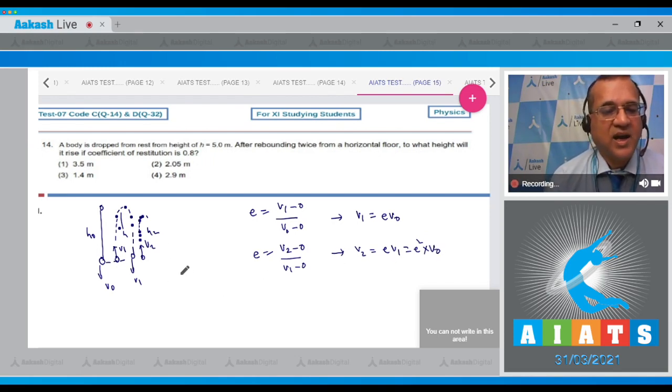Now what is the formula for height? You know that v equals root of 2gh. In the first case, and what will v₁ be? This is 2gh₁, the height, and v₂ equals 2gh₂.